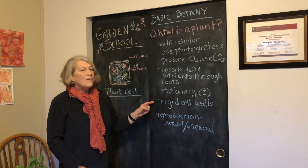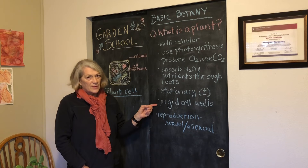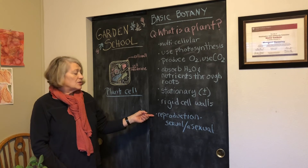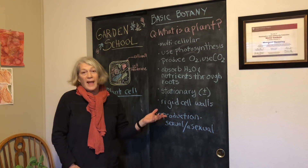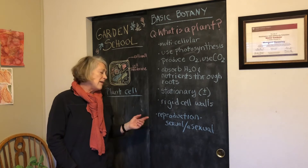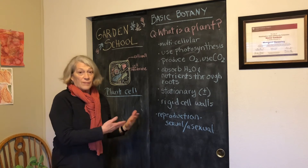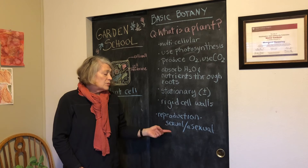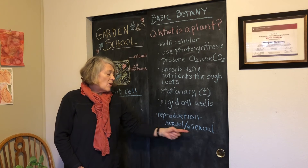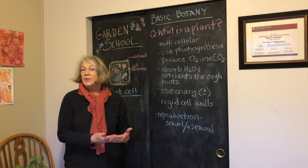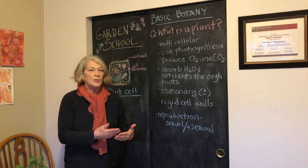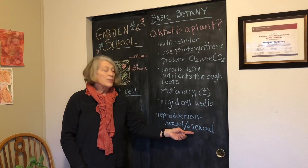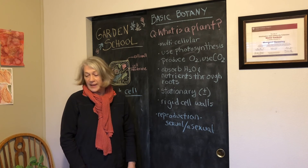They do have rigid cell walls and that gives them their structure. And the reproduction is through sexual and asexual means. You can have seed reproduction from a flower that's pollinated — that's the sexual reproduction — and then the asexual, which could be starts, shoots, or runners, where you get a clone actually of the plant.